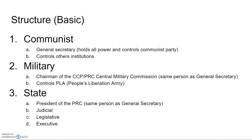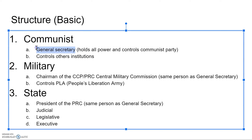The basic structure of the country is you have the Communist Party. The Communist Party has a general secretary who holds all power and controls the party. The party also controls the other institutions. You have the military, which has a chairman of the CCP/PRC Central Military Commission — the same person as the general secretary — and they control the People's Liberation Army. Then you have the state, ruled by the president of the PRC, which is also the same as the general secretary.